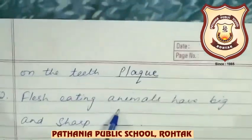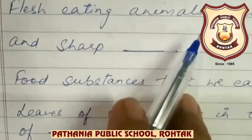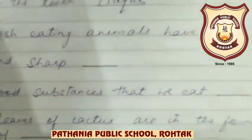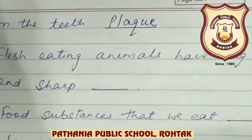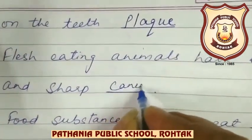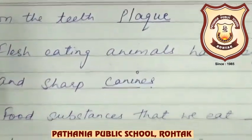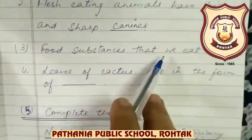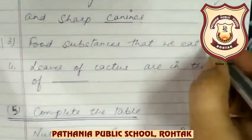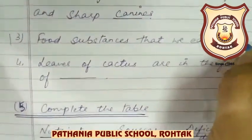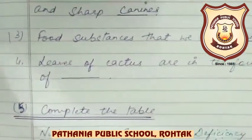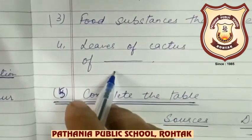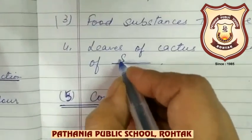Flesh-eating animals have big and sharp canines. Food substances that we eat are called nutrients. Leaves of cactus are in the form of spines.